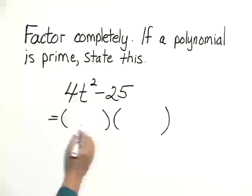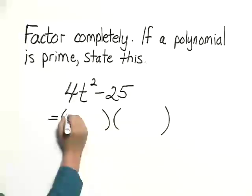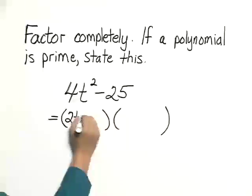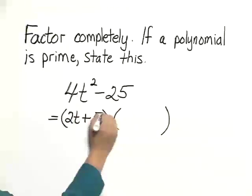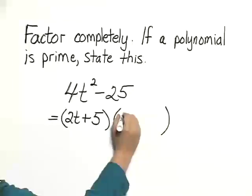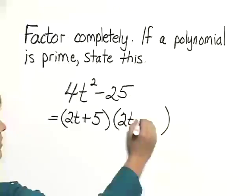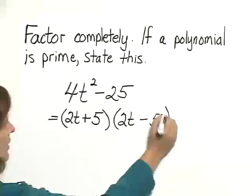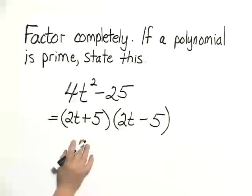In the first binomial, we write the square root of this, which is 2t, plus the square root of 25, which is 5. And in the second binomial, we write 2t minus 5. If we multiply this out, it would check. So this is the factorization of the polynomial.